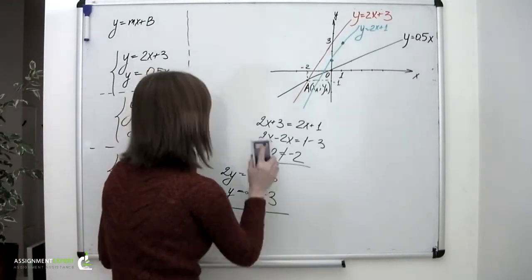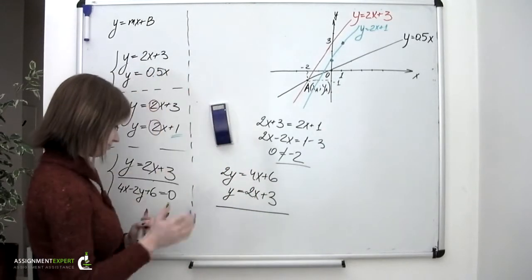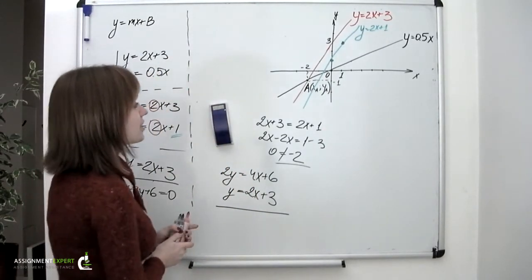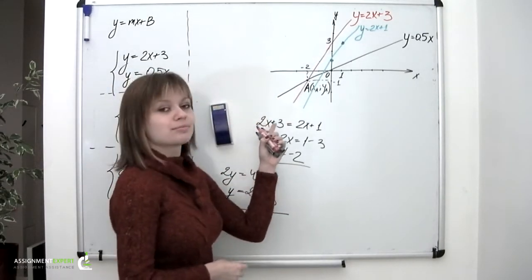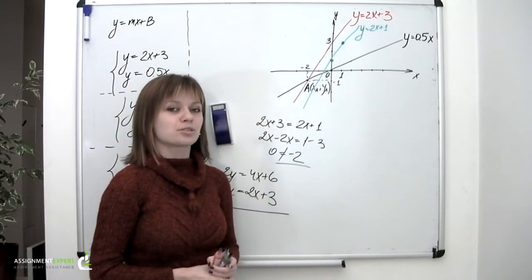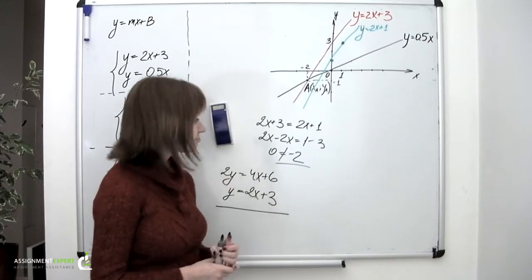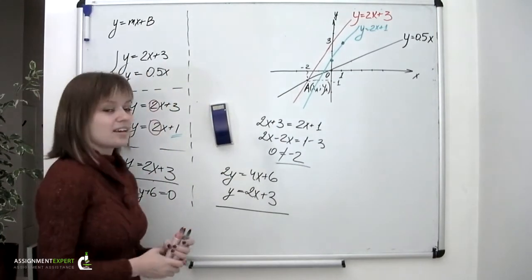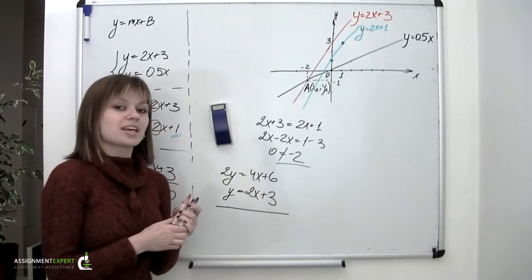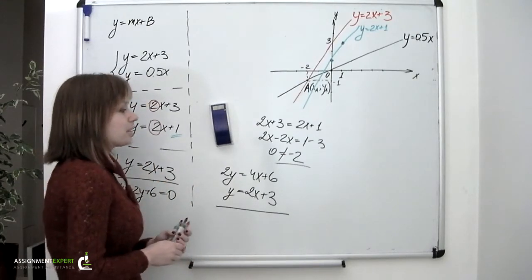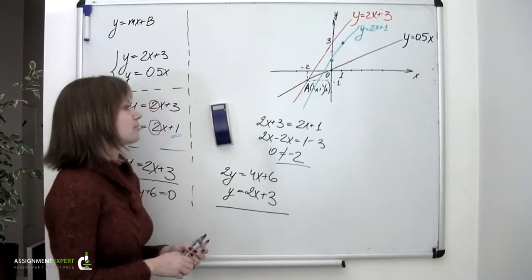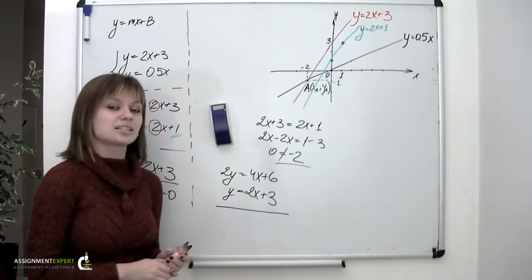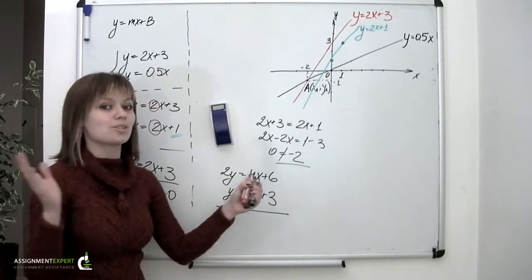And now, summing up. If you intend to find an intersection point for two lines, face it, guys, you're going to have to solve this system of equations. But you should first look at these equations carefully. Because if the slopes of the lines are equal, it means that the lines are parallel and the system has no solutions. There's no point of intersection.